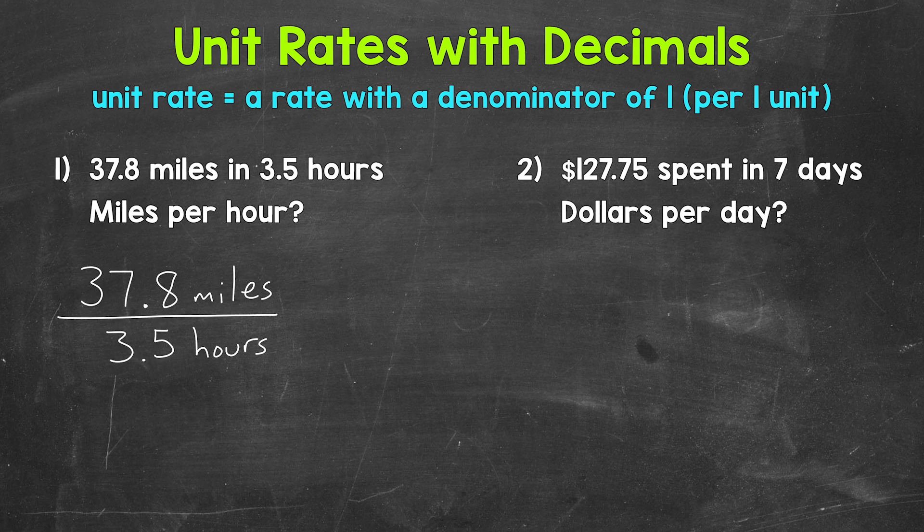Now let's find the unit rate. Unit rates always have a denominator of 1. We want per 1 unit. In this case, we want how many miles per 1 hour. Let's do this by dividing our denominator by 3.5. That will give us a denominator of 1 representing 1 hour.